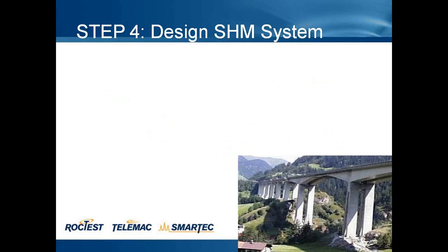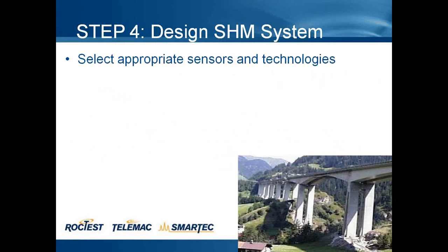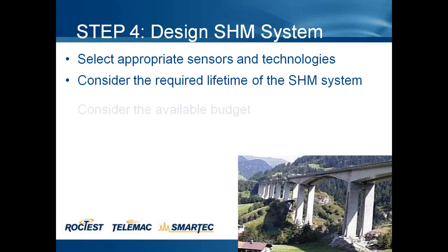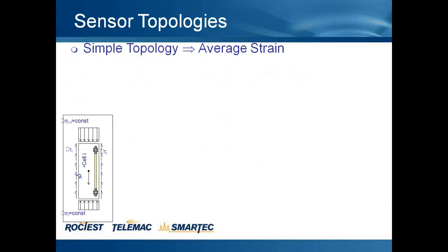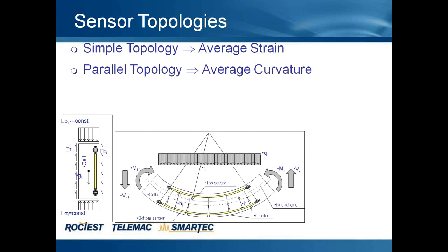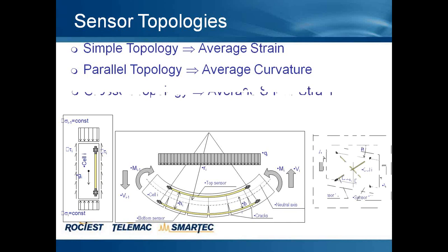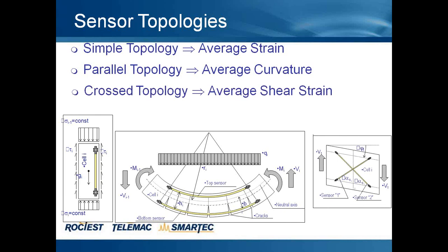Step four — the main step — is the design of the structural monitoring system. By selecting appropriate sensors and technologies, consider the required lifetime of the structural monitoring system, the available budget, the reliability and redundancy of the sensors, and the installation schedule. Regarding this step, we can have basically three different kinds of topology when we integrate strain and deformation sensors: the simple topology to assess the average strain, the parallel topology to assess the average curvature, and the cross-set topology to measure the average shear strain.